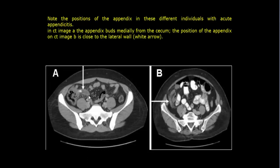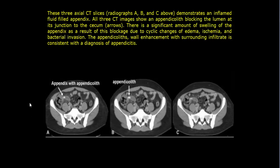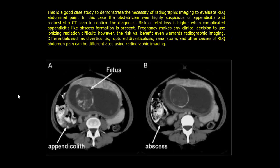Note the varying positions of the appendix on CT: it may project medially from the cecum, or close to the lateral wall. An axial CT image shows an appendicolith blocking the lumen at the junction with the cecum. This is a good case demonstrating the necessity of radiographs to evaluate right lower quadrant abdominal pain. The risk of vital loss is higher in complicated appendicitis such as abscess formation, as shown with appendicolith and abscess-complicated appendicitis.